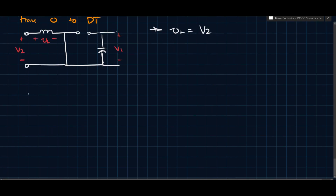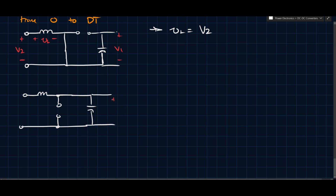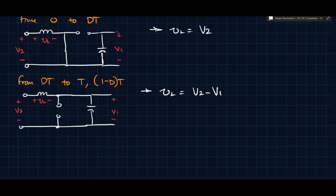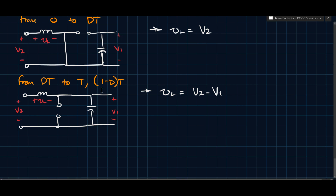In the second switching state, the transistor is off — so it becomes an open circuit — and the diode is now conducting, replaced by a short circuit. In this state, VL equals V2 minus V1. This second state runs from DT to T, which is a total duration of (1 minus D) times T.